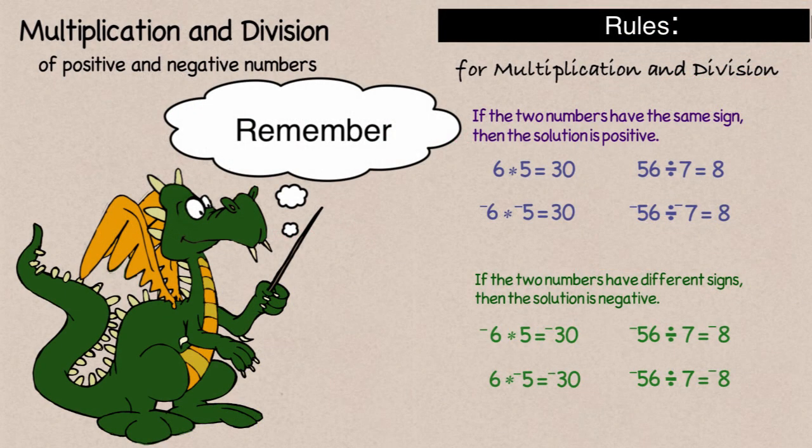So the rules for multiplying and dividing both positive and negative numbers are the same. If the signs are the same, my final answer will be positive. If the signs are different, my final answer will be negative.